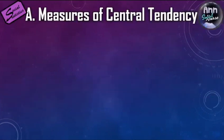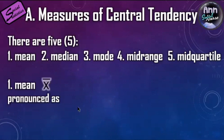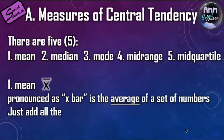Now, the measures of central tendency — this is labeled A, because next will be the measures of dispersion, labeled B, which will be covered in another video lecture. There are five measures of central tendency: the mean, the median, the mode, the midrange, and the midquartile.